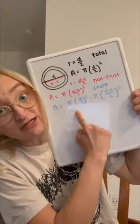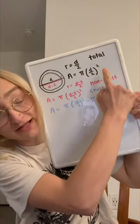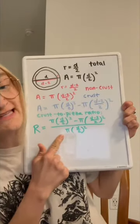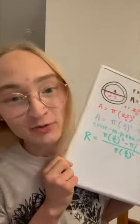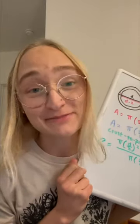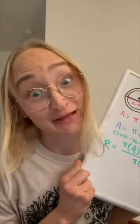Now, the crust-to-pizza ratio is the crust area divided by the total area. You could totally plug this in as is to graphing software, but I'm a weirdo when I find it very relaxing to simplify algebraic expressions, so that's what I'm going to do.